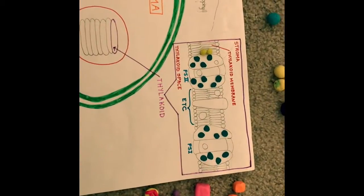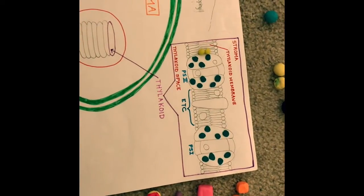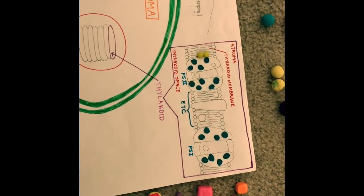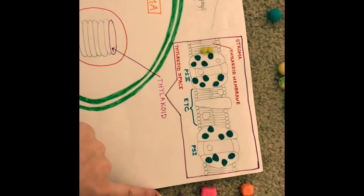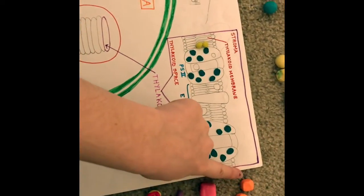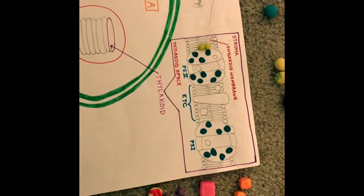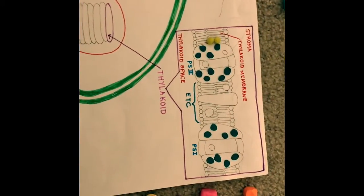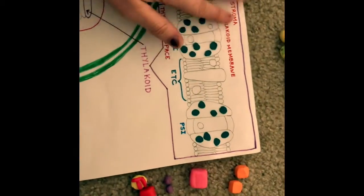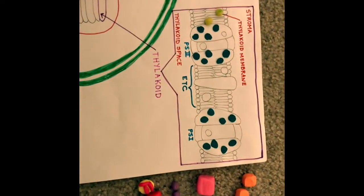To summarize, the first stage of photosynthesis converts light energy into chemical energy in two forms: ATP and NADPH, which is a source of electrons and can be used as a reducing power. This entire process happens in the thylakoid.